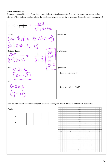Y-intercepts happen when we make x equal to 0. So I get 2 over 6, or 1 third — that's 0 plus 2 in the numerator, and 0 plus 2 times 0 plus 3 equals 6 in the denominator. X-intercepts happen when the function equals 0, which can only happen if the numerator equals 0. So x equals negative 2 is my x-intercept.